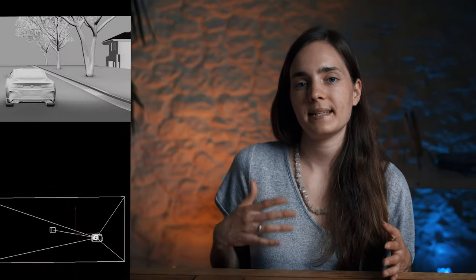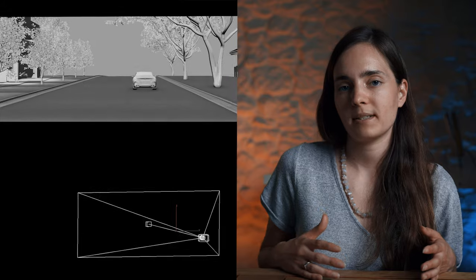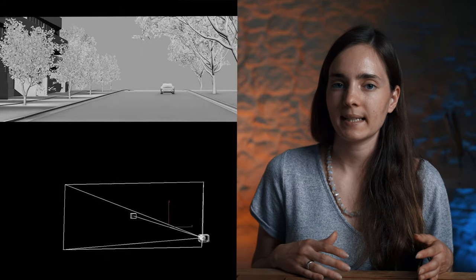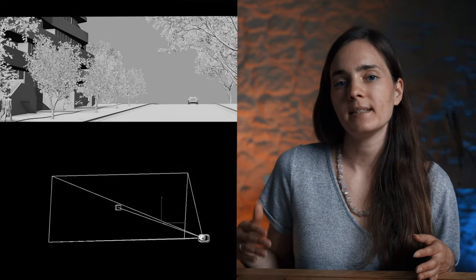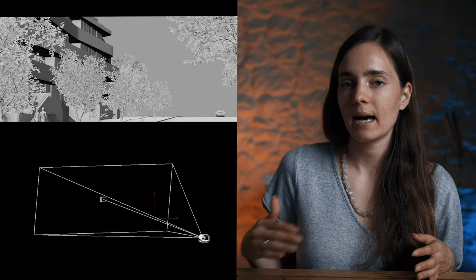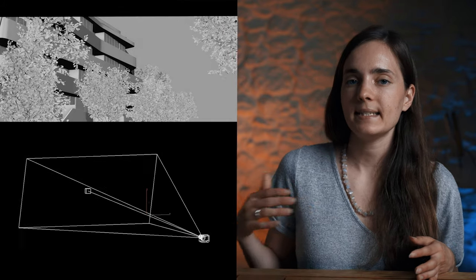This is a combination of the basic camera movements — basically we tilt and pan the camera at the same time. It works pretty well in real estate videos when you want to show the entire building.